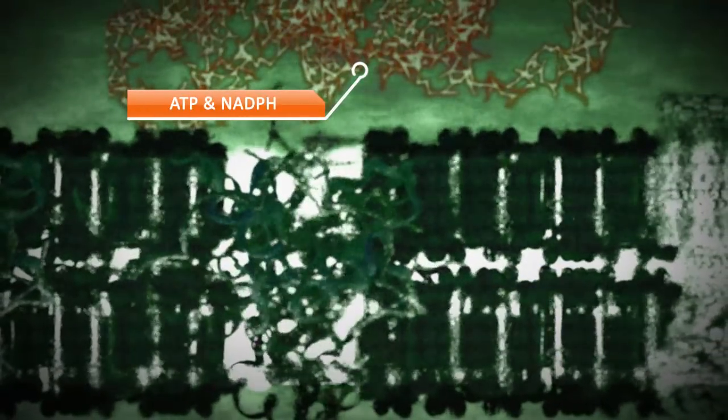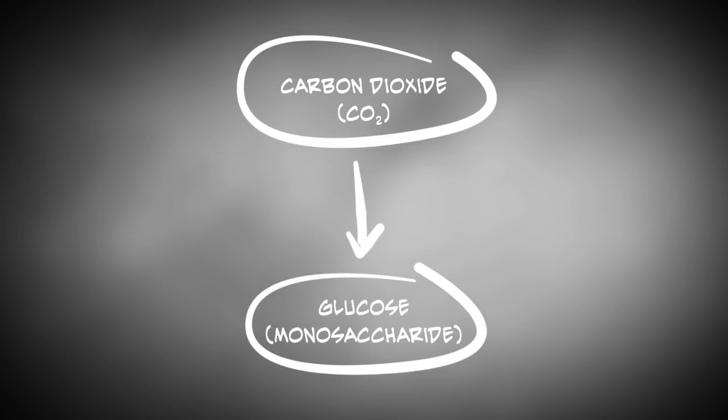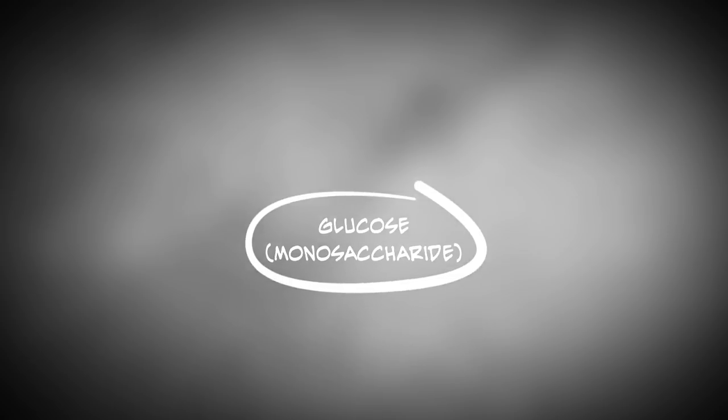ATP and NADPH, which are products of this process, can then be found in the stroma, where a process known as Calvin cycle takes place. No light is necessary for the Calvin cycle. During the Calvin cycle, carbon dioxide is reduced to form carbohydrate in a series of reactions. Here, NADPH is the reducing power source whereas ATP is the energy source. Glucose is the primary product. It serves as an energy source for the plant itself.